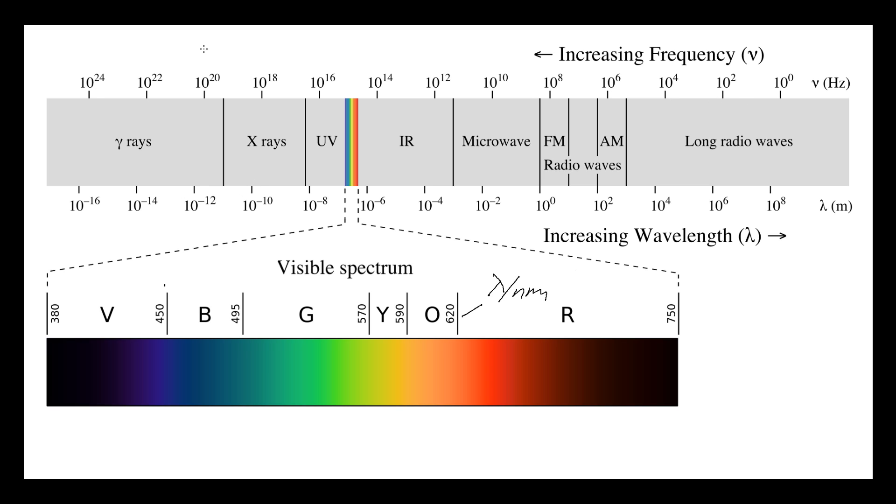Along the top frequency, same sort of scale, going from 10 to the nought hertz, so one oscillation per second, all the way through to 10 to the 24 hertz, which would be approximately a million, billion, billion oscillations per second.